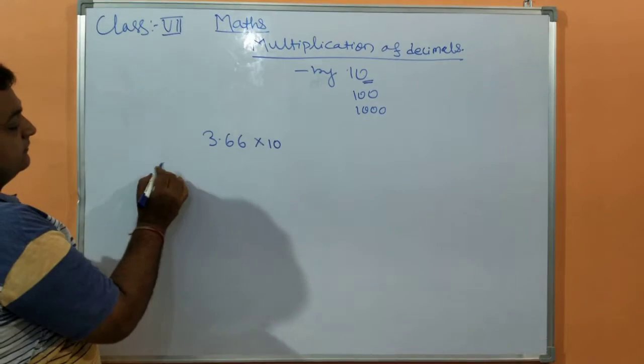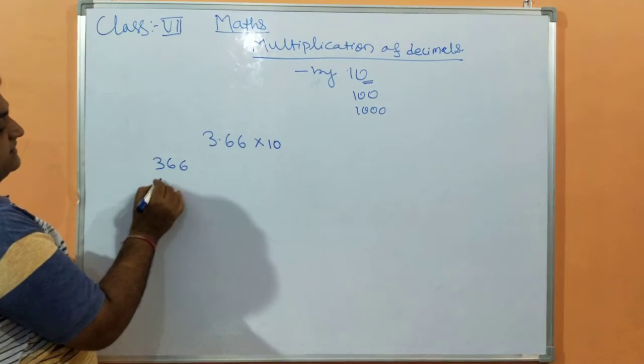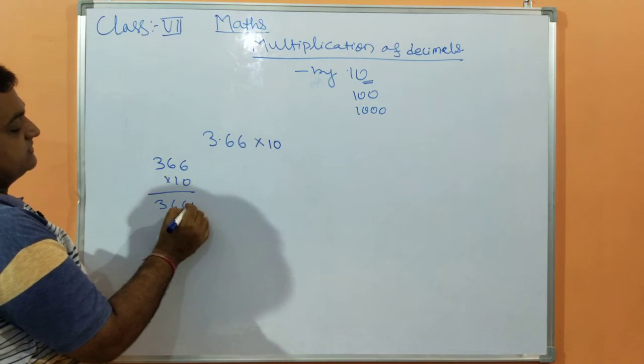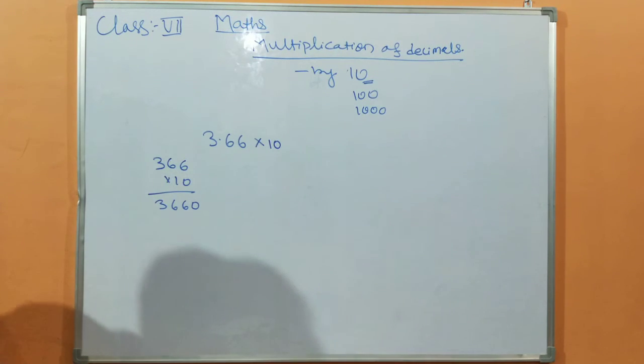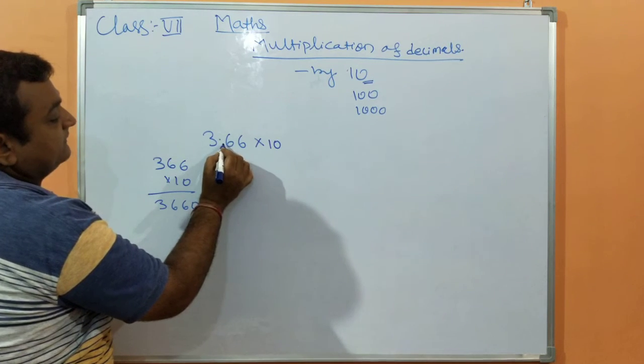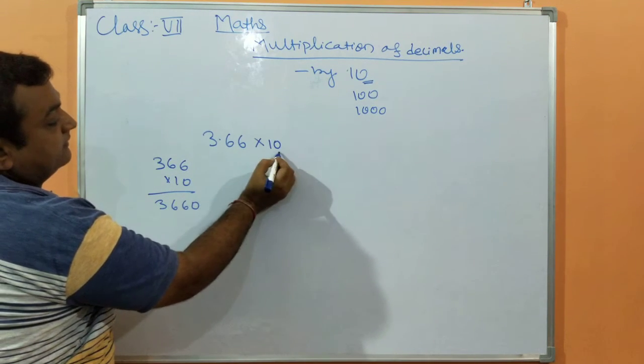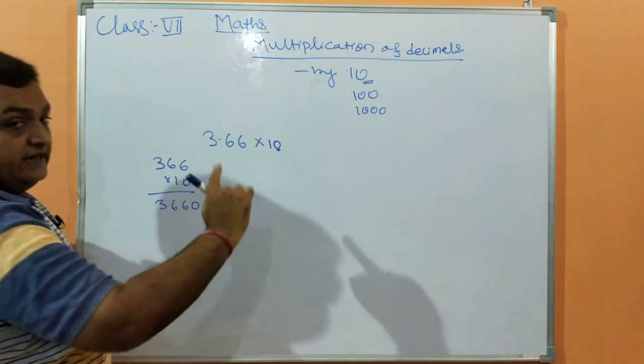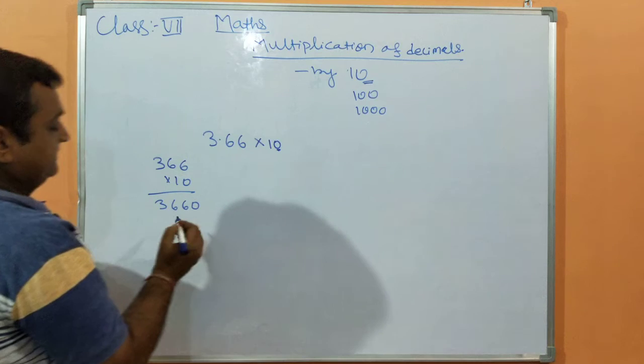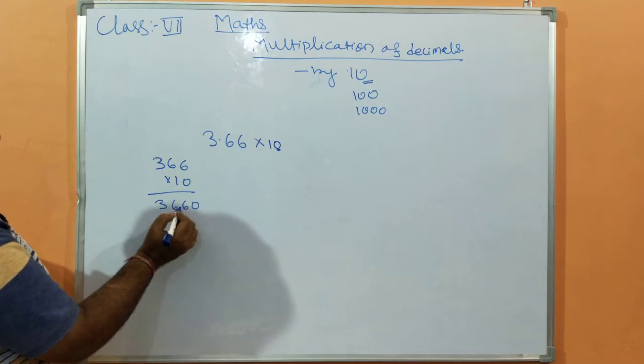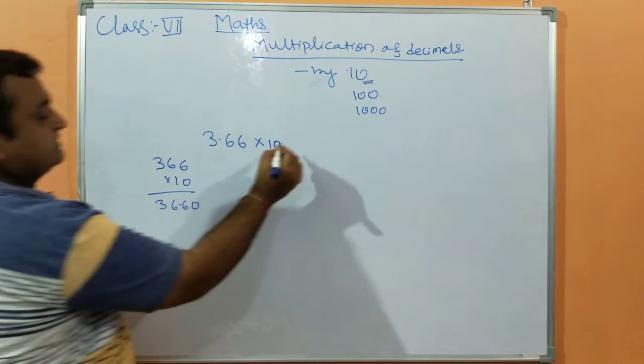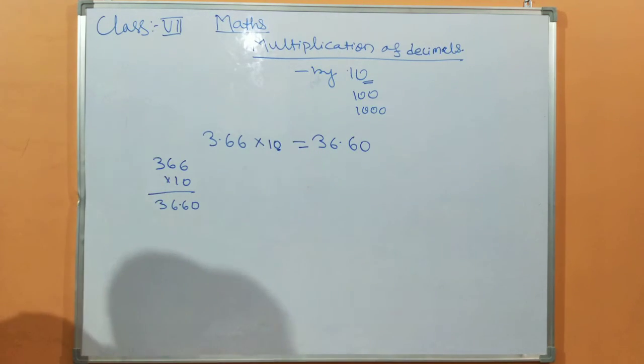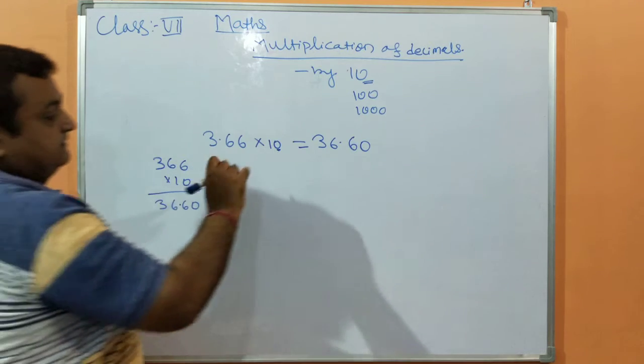This is 3, 6, 6 into 10. We count 3, 6, 6, 0. Now we will see the decimal place. Our decimal position is 1 digit, so it will shift to the right side. The answer is 36.6, with the digit shifted to the right side.